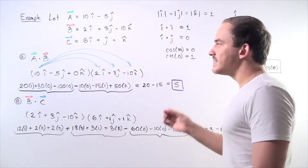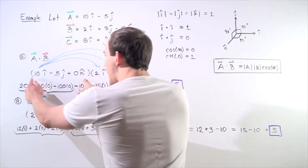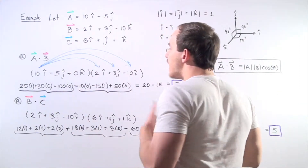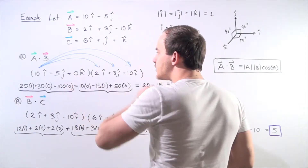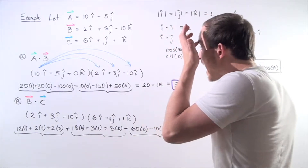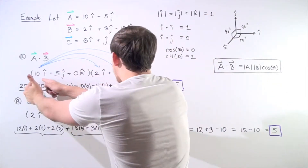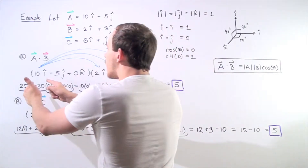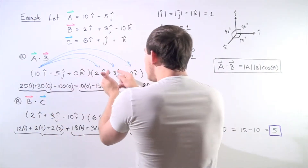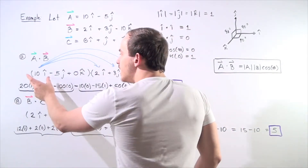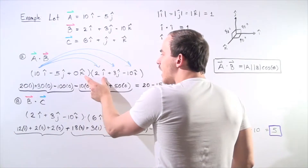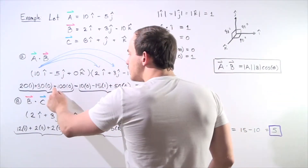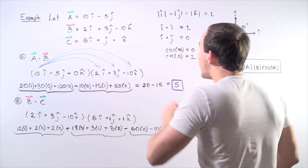We want to find the dot product of vectors A and B. Notice that for vector A, we don't have the K term, so we simply put a 0 in front of it. What we're essentially doing is taking the dot product of each one of these component pairs. So we take the dot product of the X and X components, X and Y, X and Z, and continue with every single term. The dot product of 10 I hat and 2 I hat gives us 20 times 1. The dot product of 10 I hat and 3 J hat gives us 30 times 0.